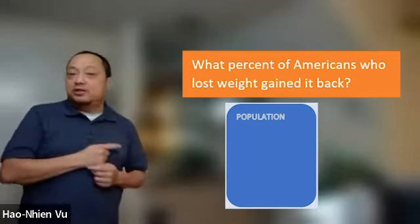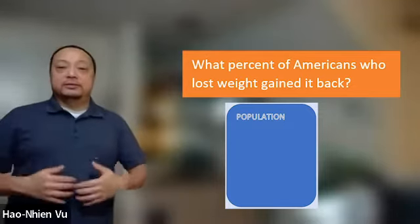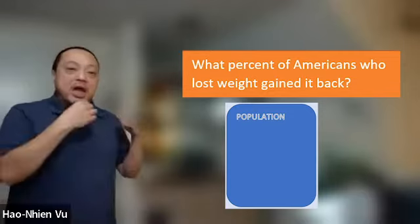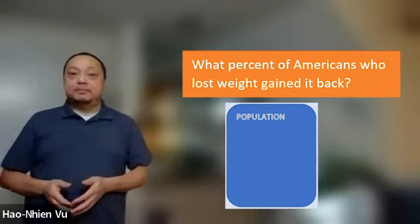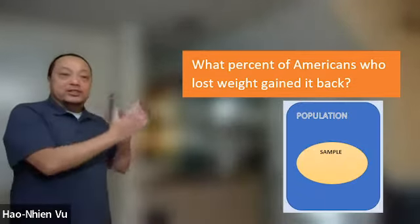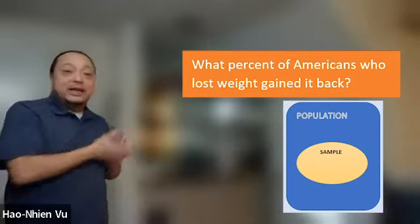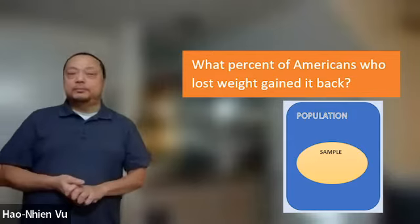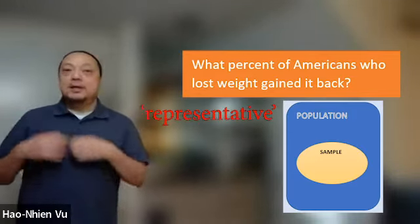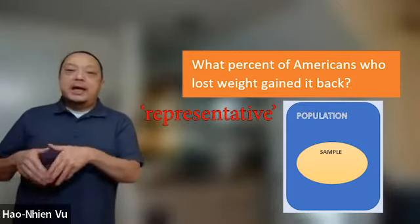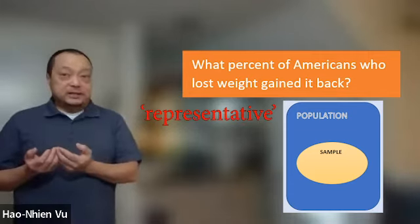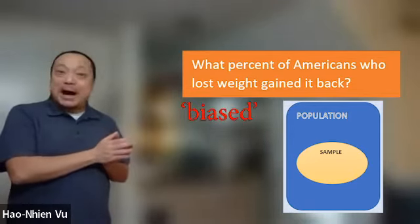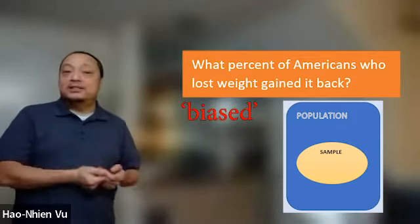You can tell this is nearly impossible to do. And that's true in real life. It's either impossible, or very expensive, or sometimes unethical to gather the entire population and try things out on them just to see what happens. What's done instead is to get a smaller group of Americans who lost weight, ask them if they gained their weight back, and generalize from that. That smaller group is called a sample. Good samples are representative of the population and make our generalization valid. But samples that are not representative are called biased, and a biased sample makes our generalization invalid.